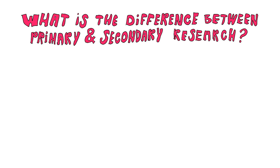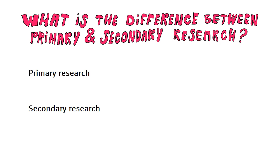I received several requests to tell you a bit more about the difference between primary and secondary research methods and explain when we use the first and when the second. Well, the most basic distinction between primary and secondary research is this: primary research is when we use original data — it is simply put new data.